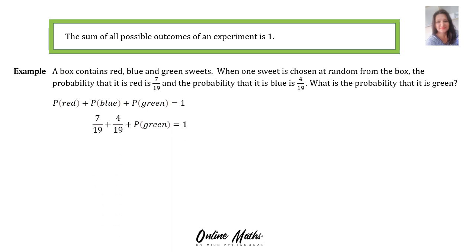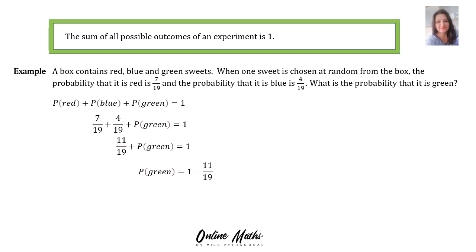Then we substitute in the values. The red was 7 out of 19, and the blue 4 out of 19. We're going to add them together: 7 plus 4 is 11 out of 19. Then you make P(green) the subject of the formula, so the 11 out of 19 will move over, and therefore the probability that you will draw a green sweet will be 8 out of 19.